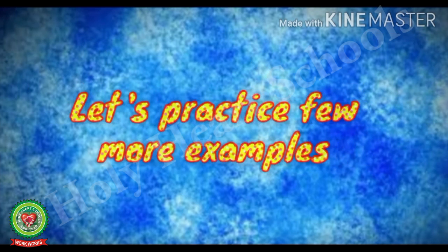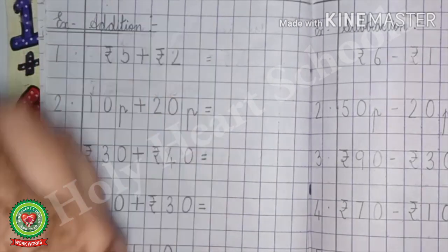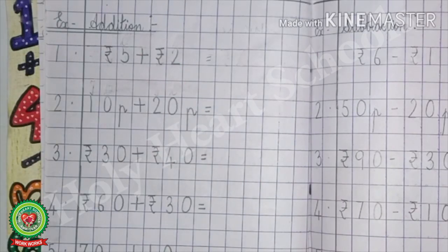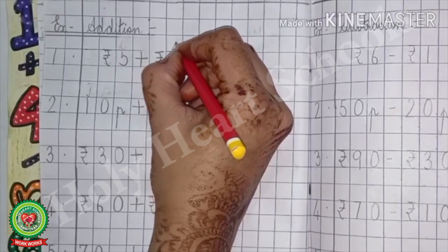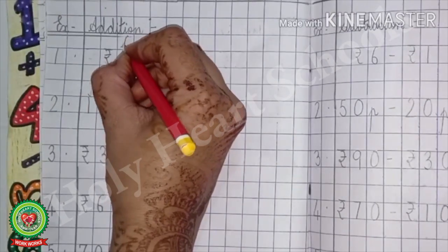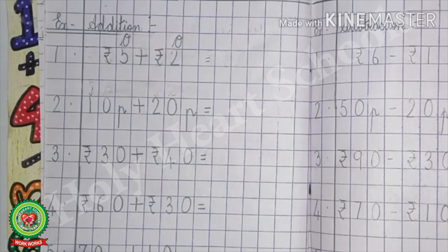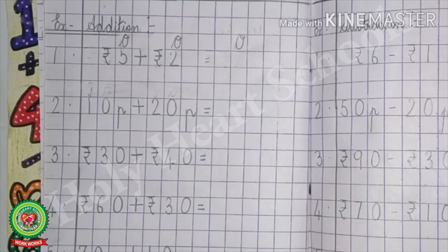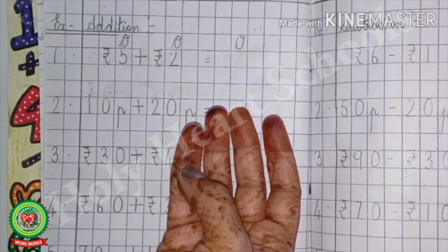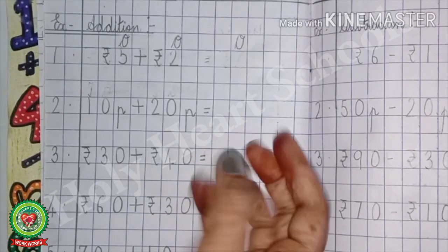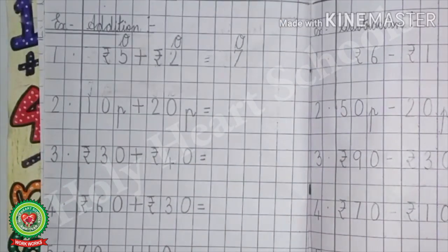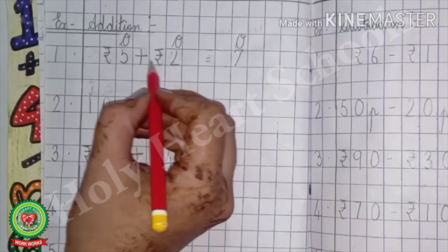Now let us practice a few more examples. Addition number 1: rupees 5 plus rupees 10. First we will write down the place value chart — 1s. In the answer again we write the place value chart. 5 plus 2: counting on from 5, we get 7. So the answer is rupees 7.